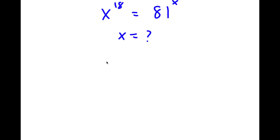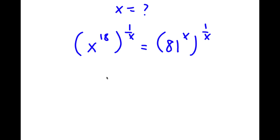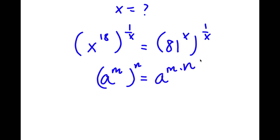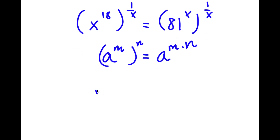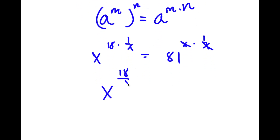To start, I'm going to take the power of 1 over x on both sides. So now I have x to the power of 18 to the power of 1 over x is equal to 81 to the power of x to the power of 1 over x. If I have something in the form a to the power of m to the power of n, this equals a to the power of m times n. So this gives x to the power of 18 times 1 over x equals 81 to the power of x times 1 over x. These cancel out, leaving x to the power of 18 over x is equal to 81.